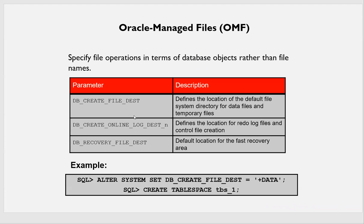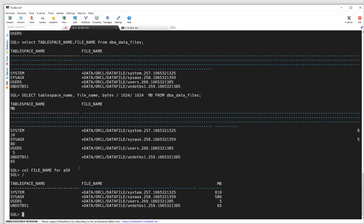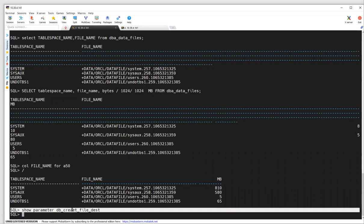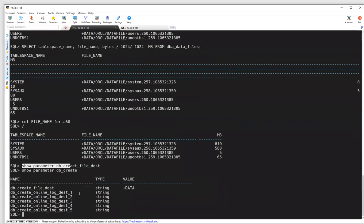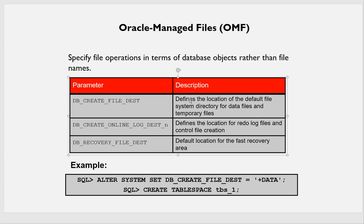That's about managing your tablespace — how you can create one. As I said, DB_CREATE_FILE_DEST: if you do SHOW PARAMETER DB_CREATE_FILE_DEST, the value is +DATA. So if you define this parameter as +DATA, your data files will be created in the default file system directory. This defines the location for your data files and temporary data files.